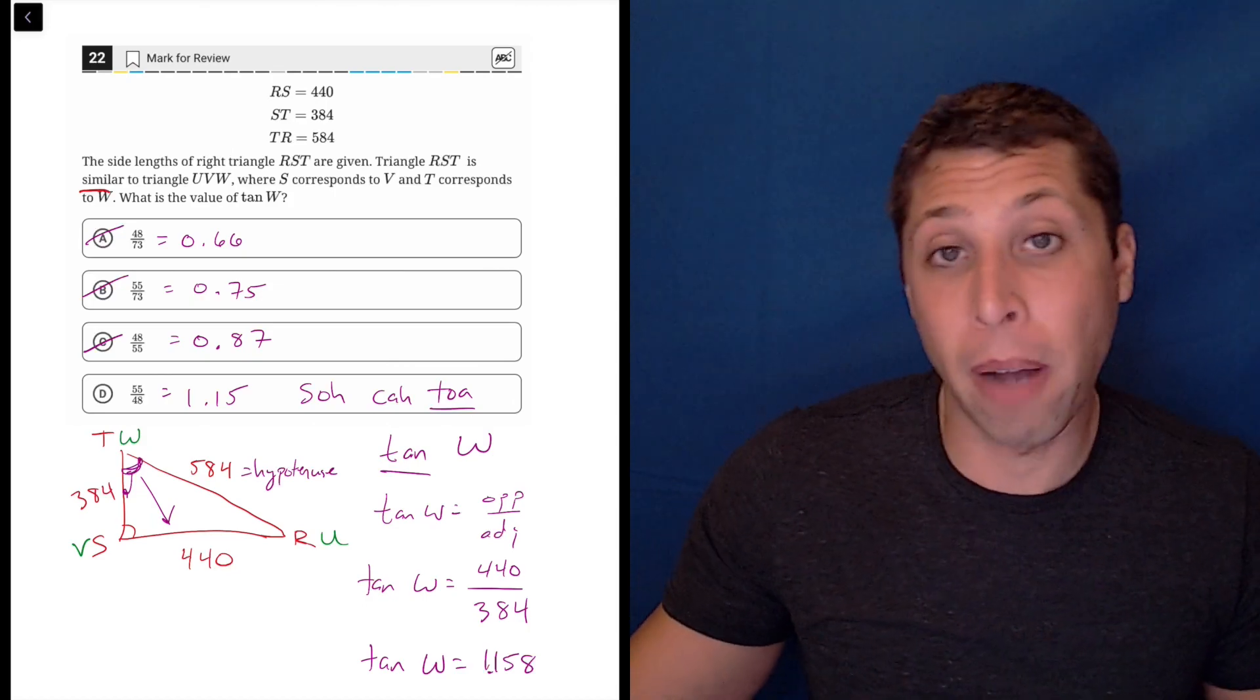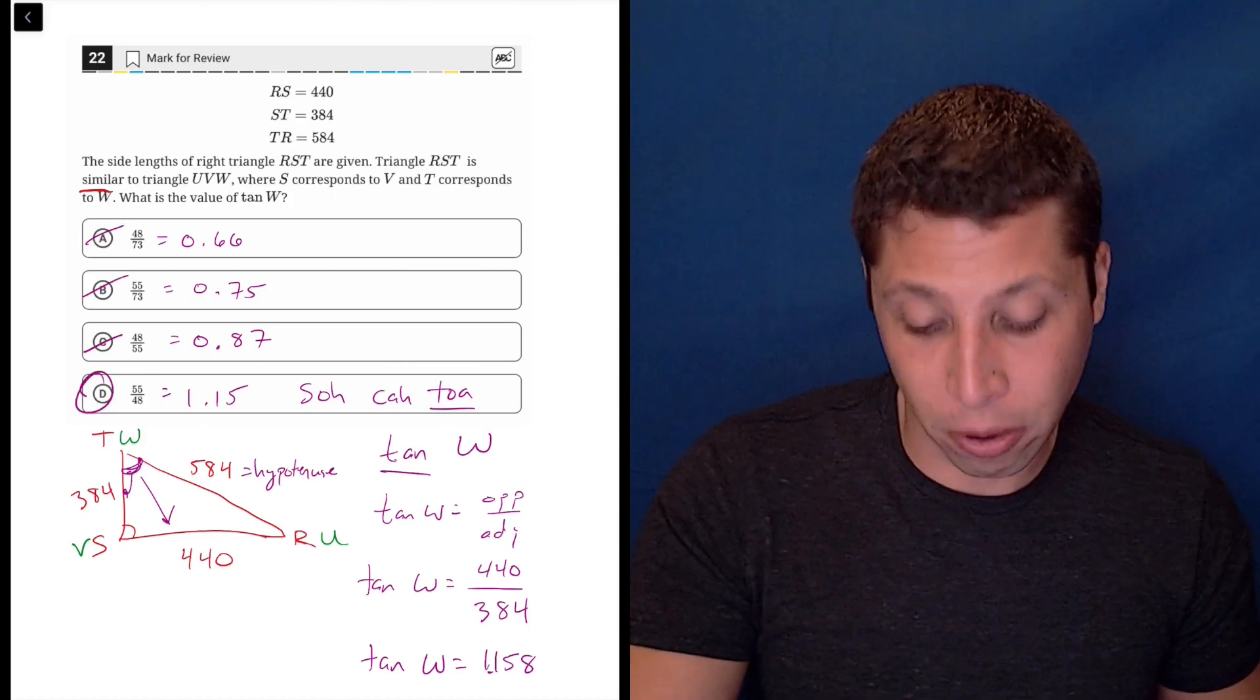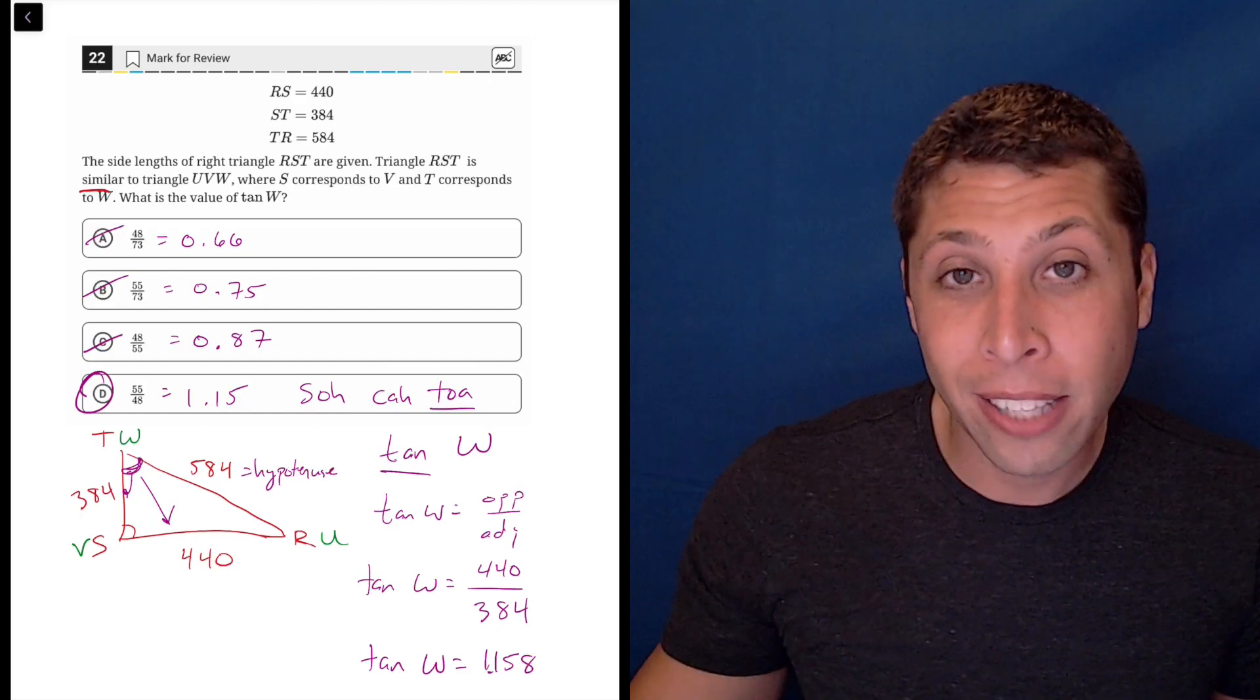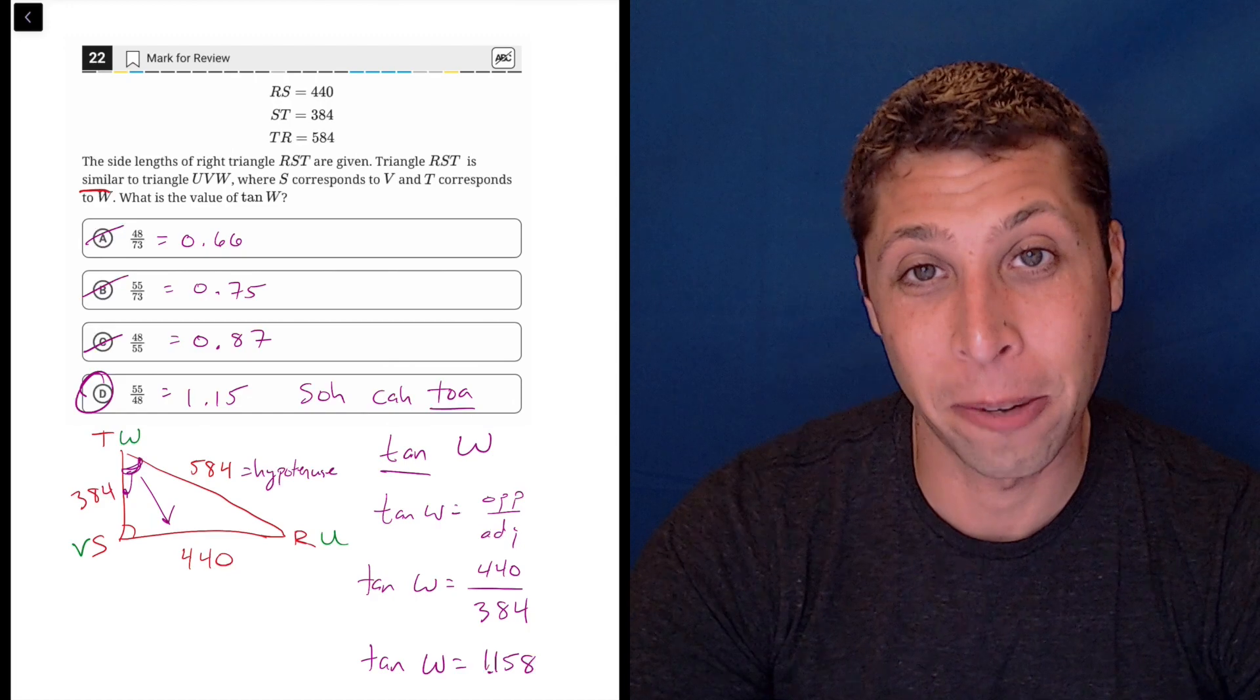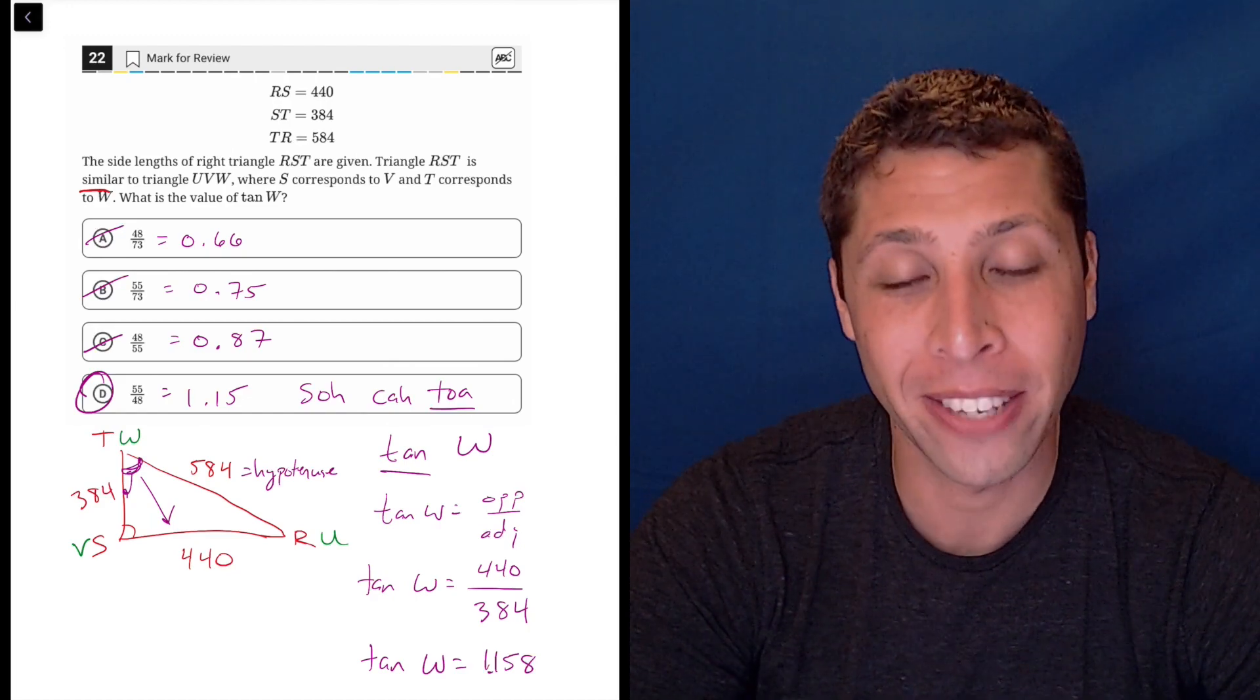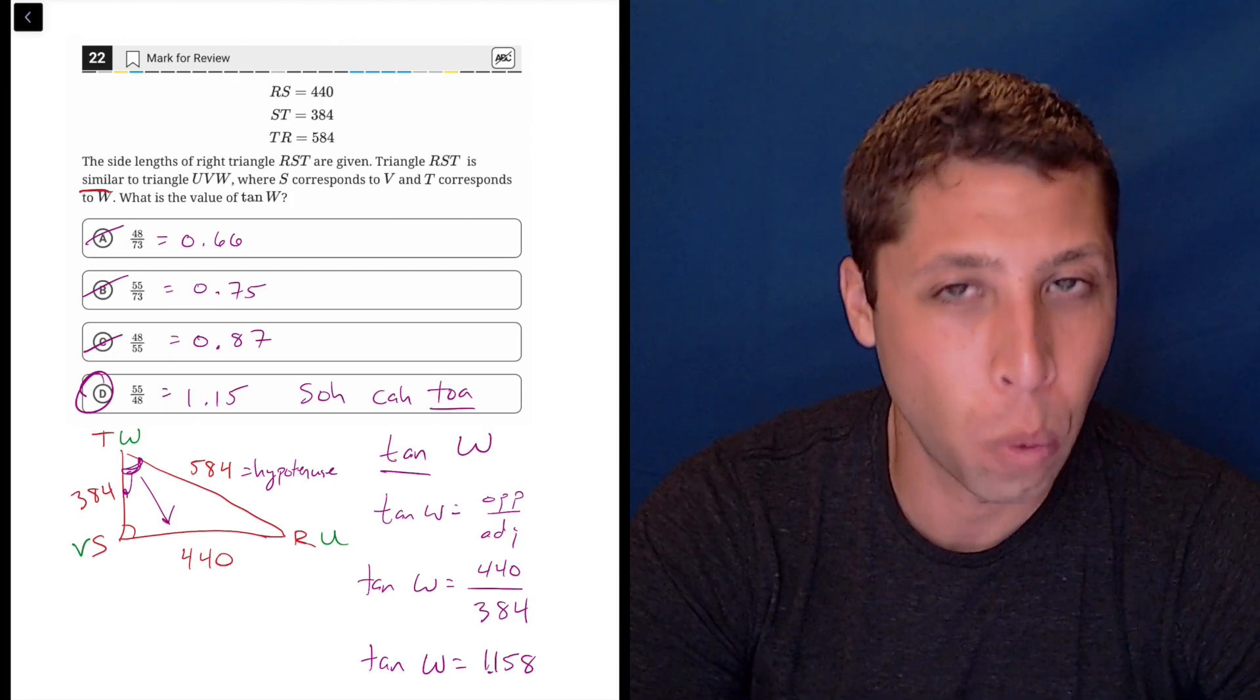I don't know, doesn't bother me enough to worry about it, so I might have done something wrong there because I got slightly different decimals with this one, but it's okay. Choice D is the answer because it's the only one that's even over 1. It's all that's left, and hopefully now you have a little bit better understanding of how trigonometry works.